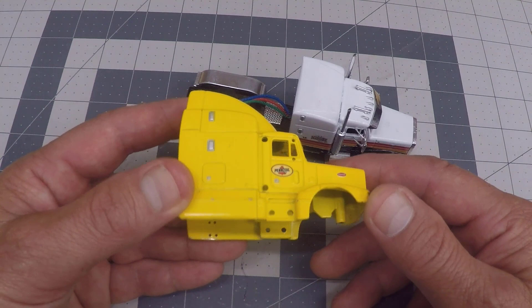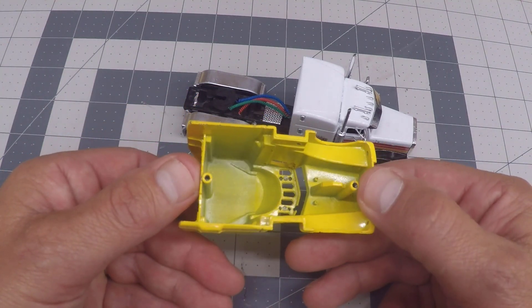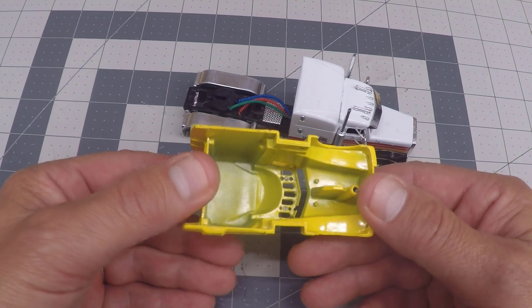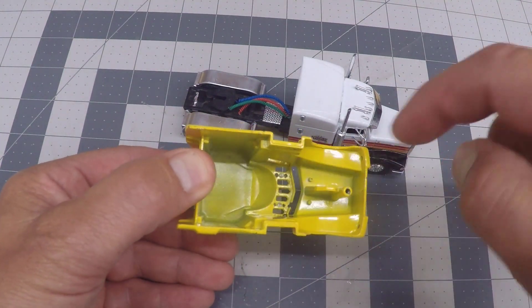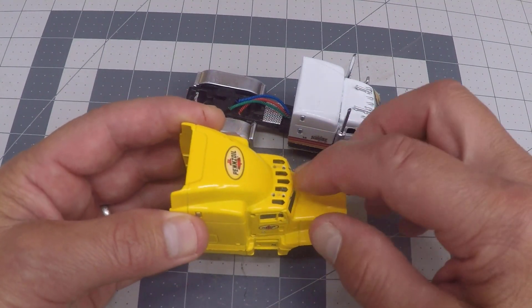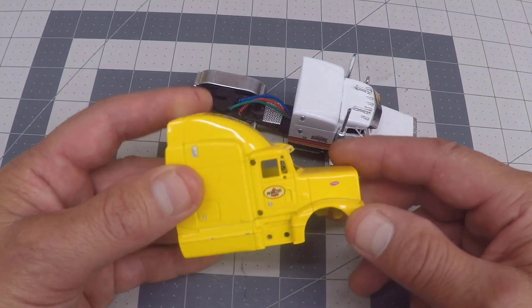These are very simple to take apart. There's only two screws that hold the cab to the frame, and then the windshield pops in very easily. There's two rivets that hold the cab lights in, and then the air horns pop out.